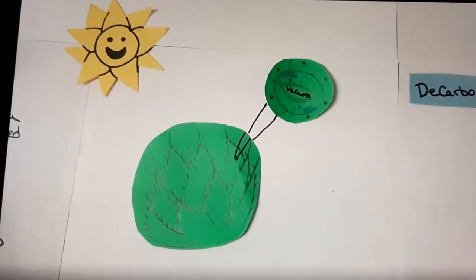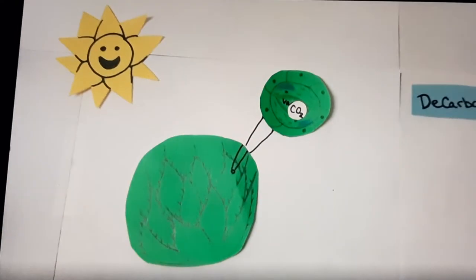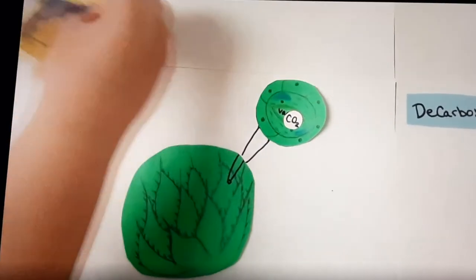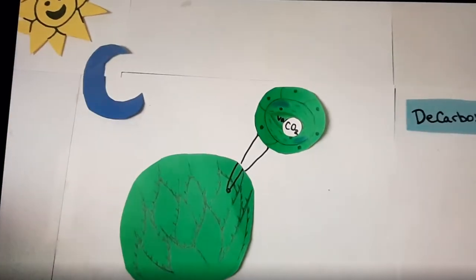While the stomata are open, carbon dioxide can enter the intracellular spaces of the leaves and then travel into the mesophyll cells. After the stomata close, the organic acids can exit the vacuoles, decarboxylate, and release CO2.